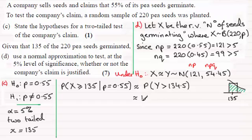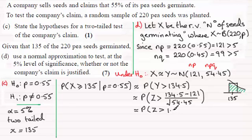And that would be the probability that Z is greater than the observed value, which is 134.5, minus the mean, which we've seen is 121, and that's all divided by the standard deviation, square root of the variance there, 54, the root of 54.45. Now, if you work this out, this then turns out to be the probability that Z is greater than 1.8295.